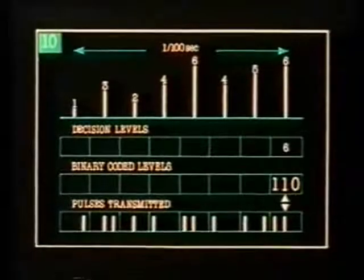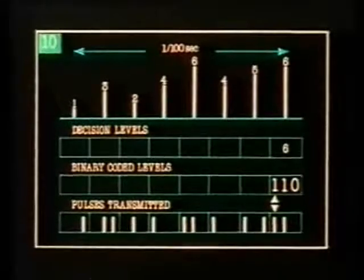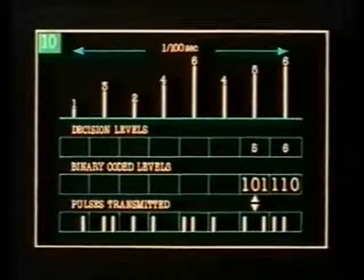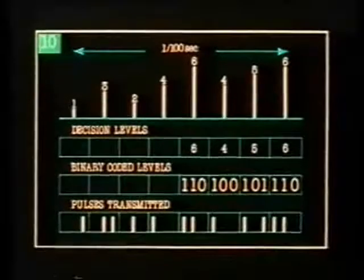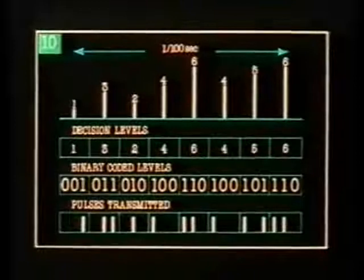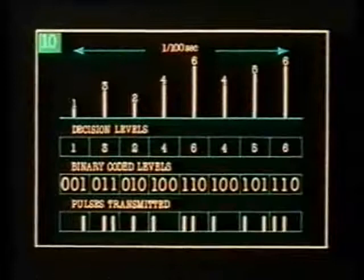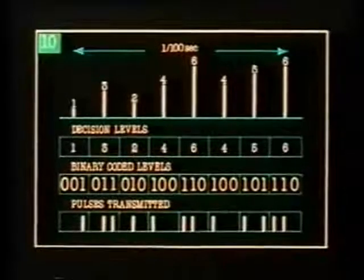Morse code can be used to send numbers by a series of dots and dashes, but the code used for speech communication is binary, just the same as is used in computers. Any number can be represented by a combination of noughts and ones. In electrical terms, a pulse represents a one, no pulse represents a nought.